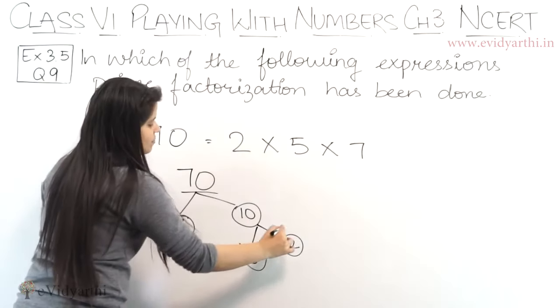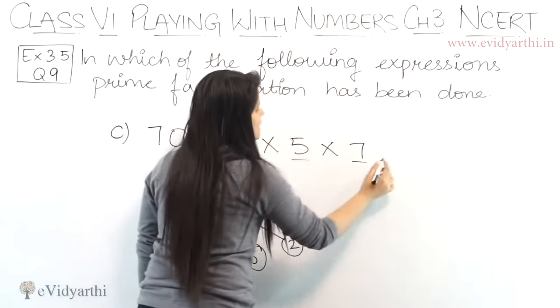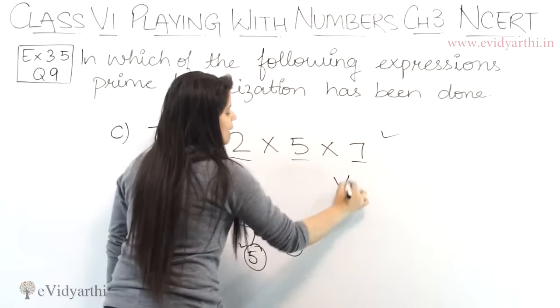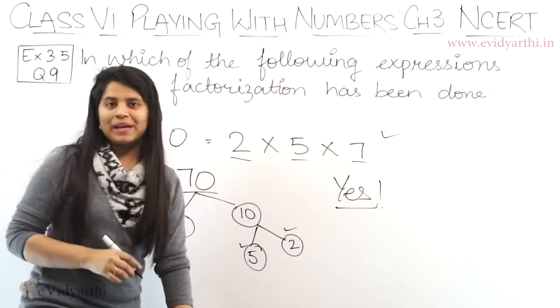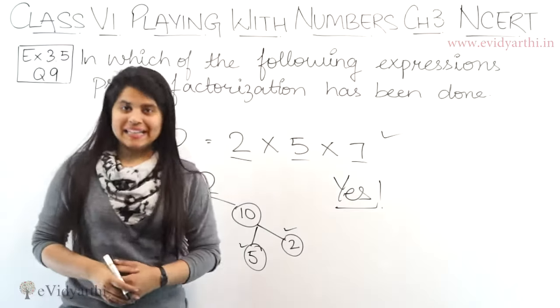So its factorization will not go further. Factors will be 7, 5 and 2. 2, 5 and 7. So this means here prime factorization has been done. Okay. So now let's come to the D part.